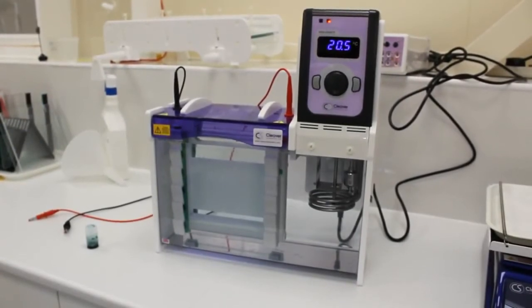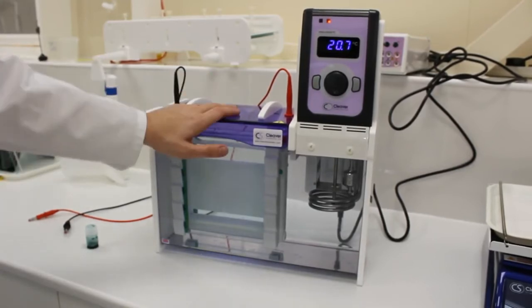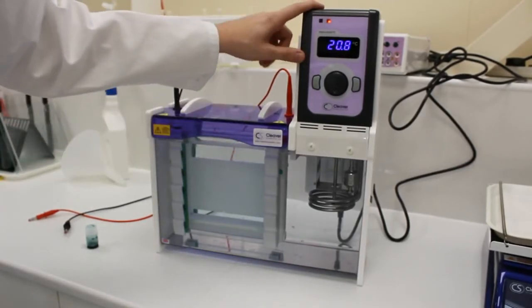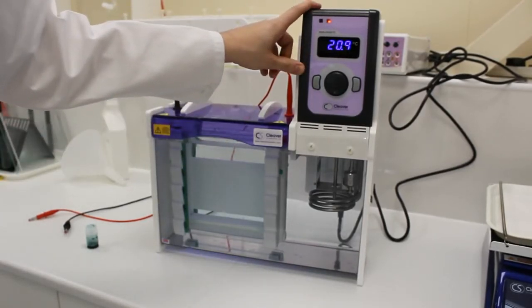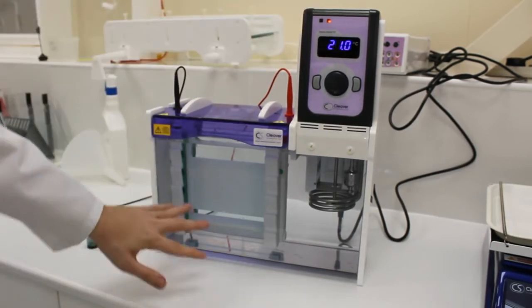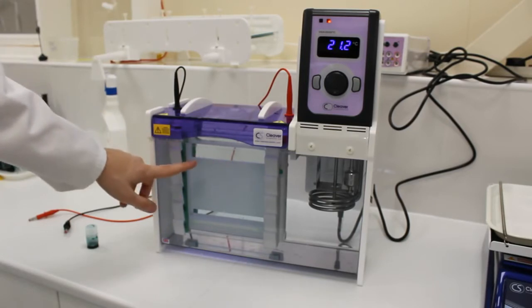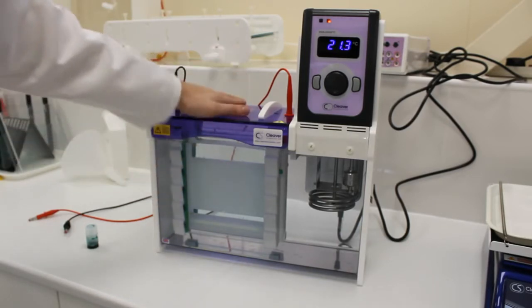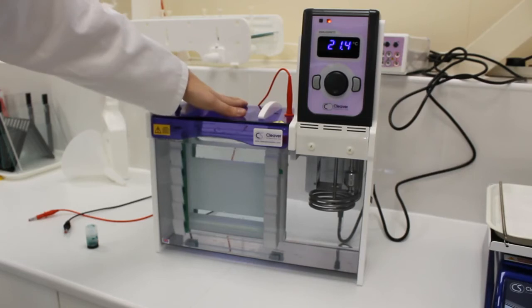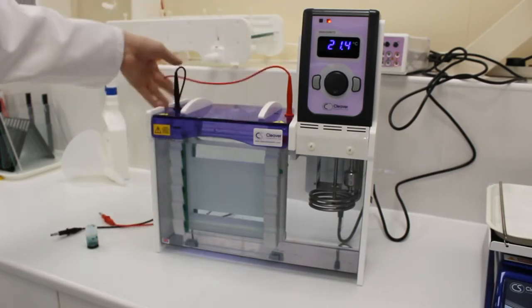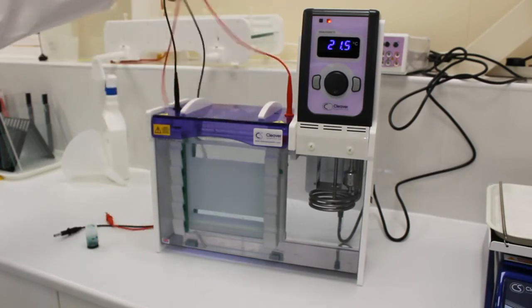So we've moved our gels into the tank and put the lid on and we're now preheating the buffer to 60 degrees. We're preheating the buffer and all the gels, and we've taken the combs out of the gel so we've got a well formation here. Once we've preheated to 60 degrees we'll load our samples and connect to the power supply using the electrode cables and start the run.